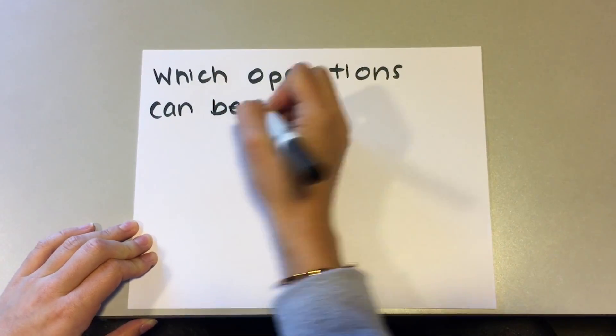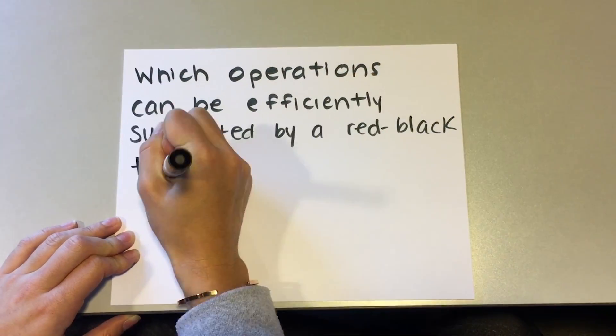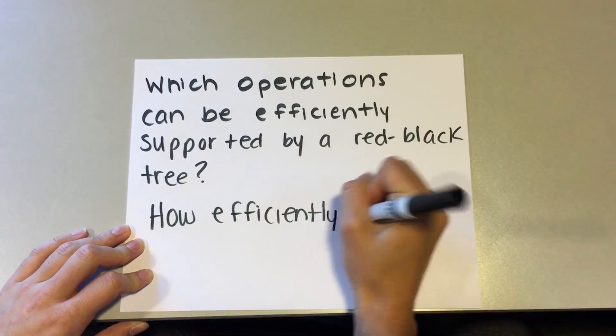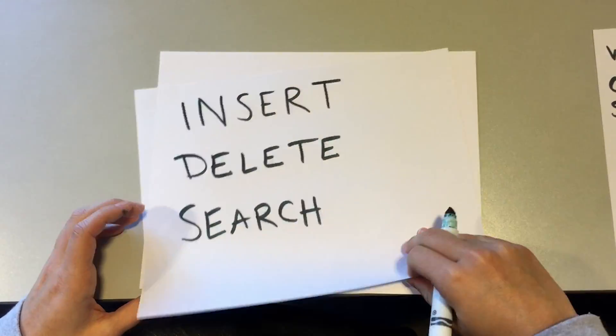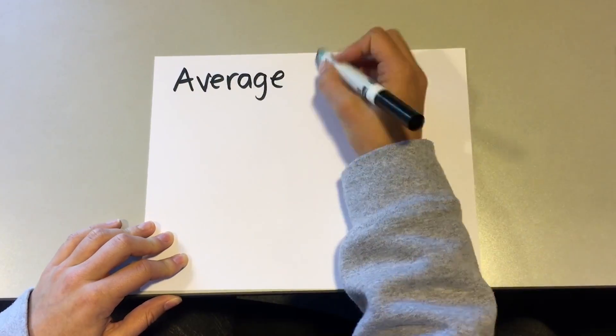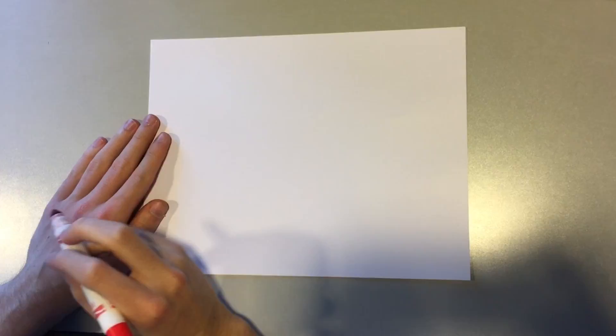Which operations can be efficiently supported by a red-black tree, and how efficiently? Insert, delete, and search — average and worst case O(log n).